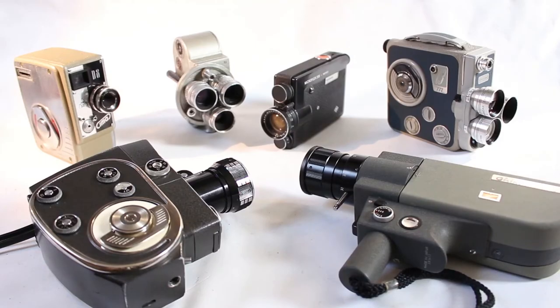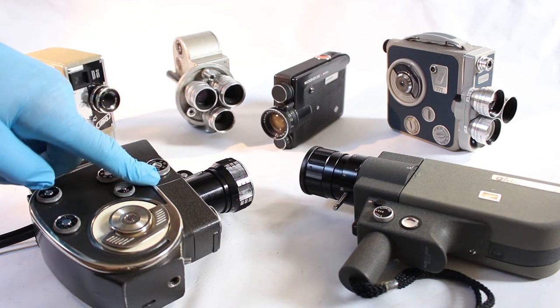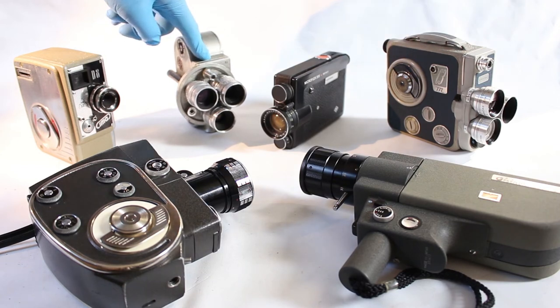So there we have it. Instant camera collection. £60 for six cameras, 10 quid each. I'm very happy with this. I'd say my favorite one of all of these, it's got to be the Quartz Zoom Soviet one, followed by probably the UMIG and the Bell & Howell tied.